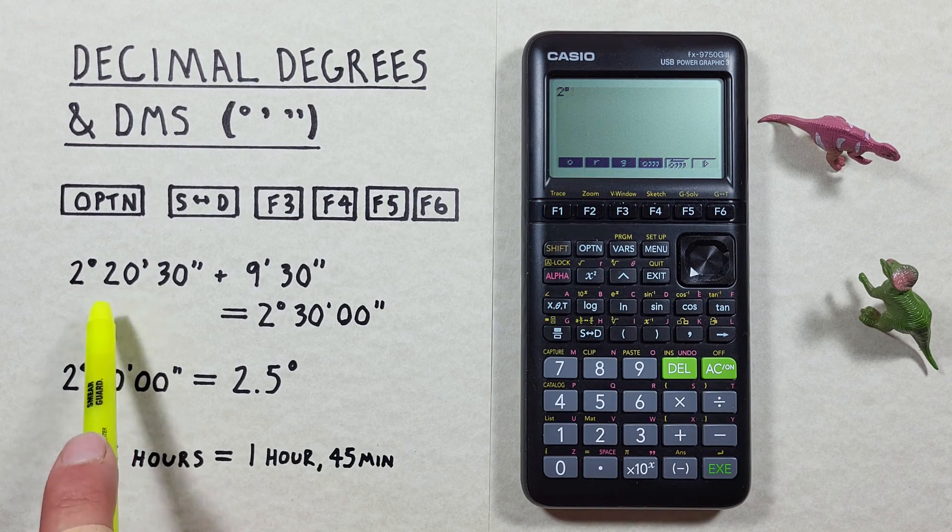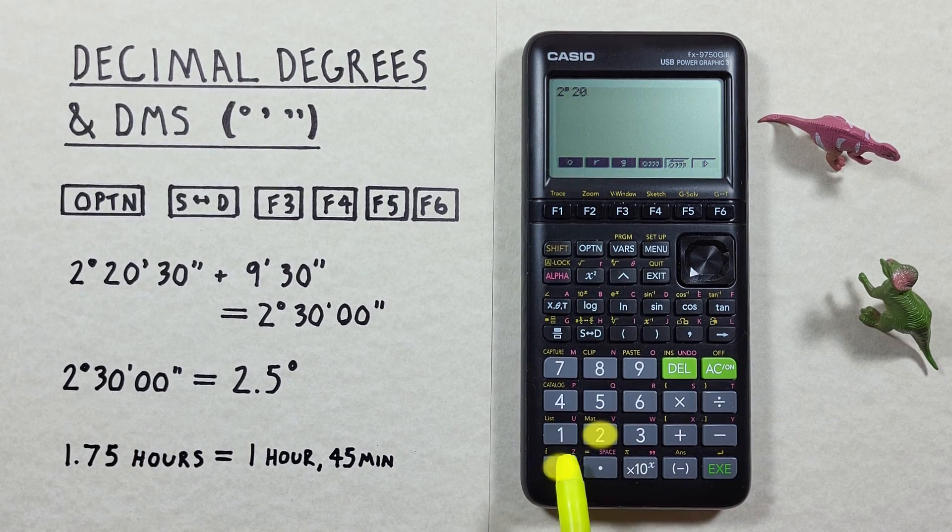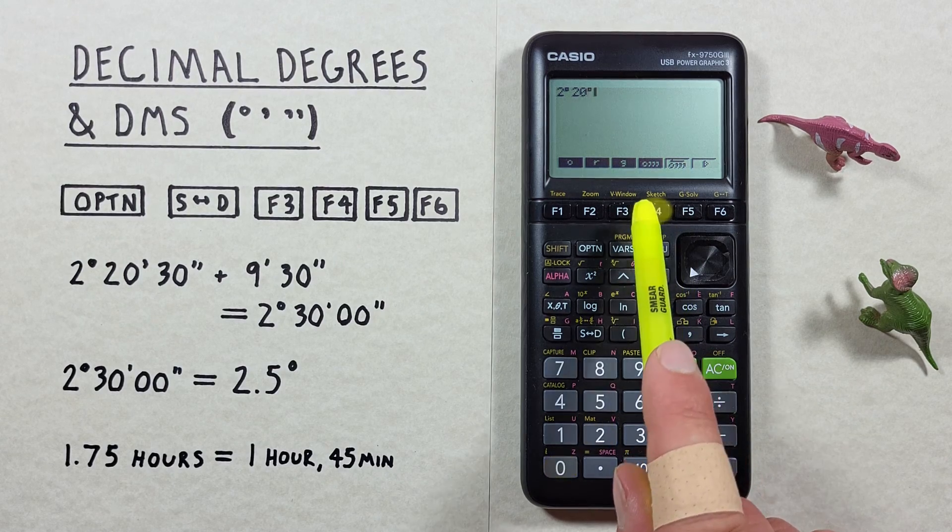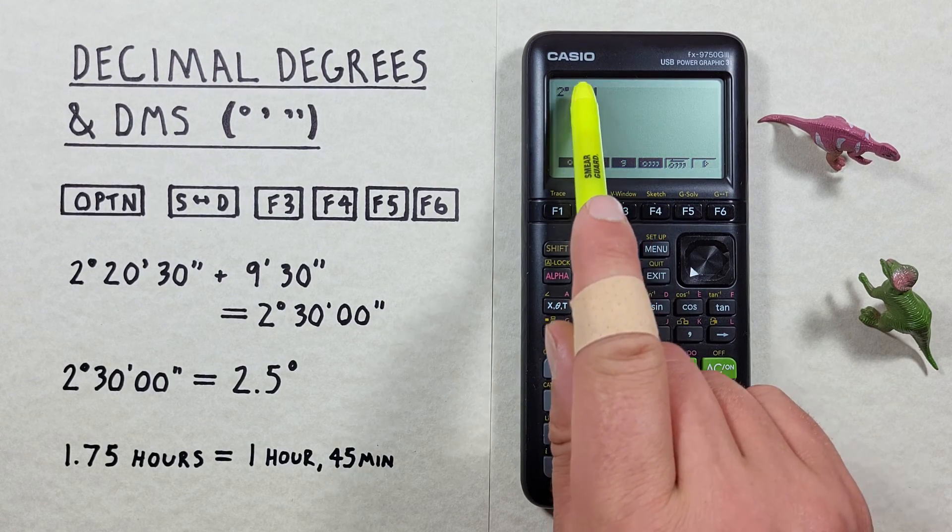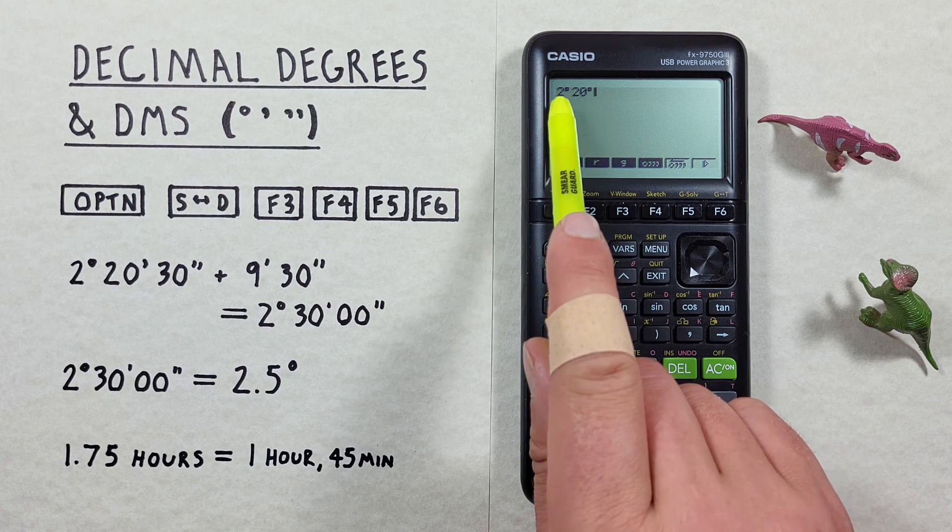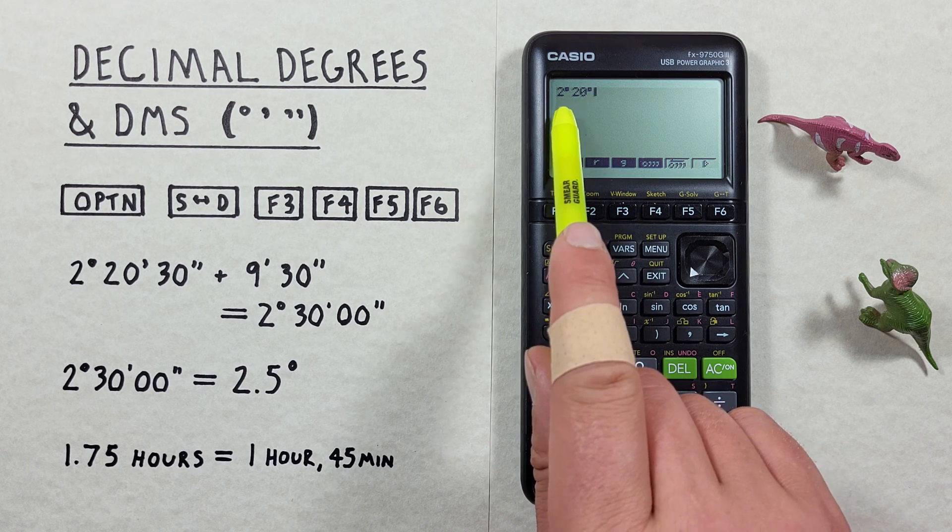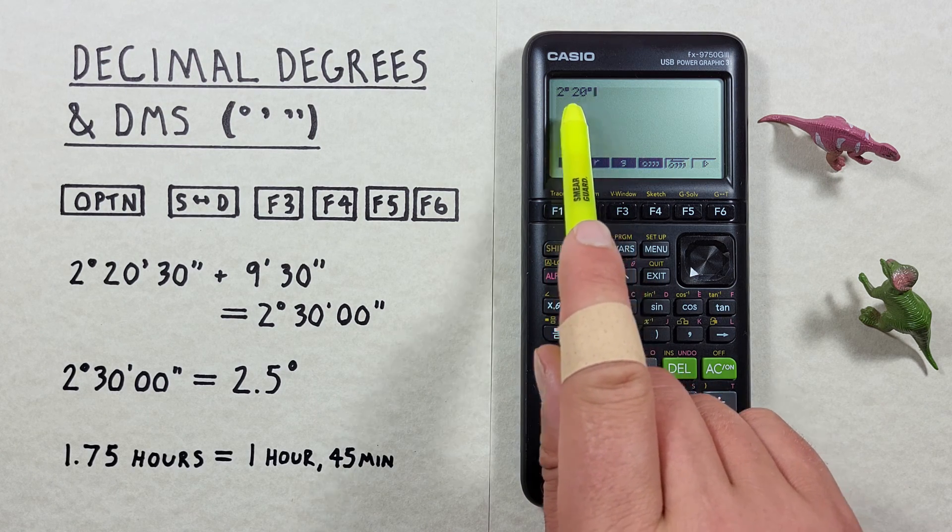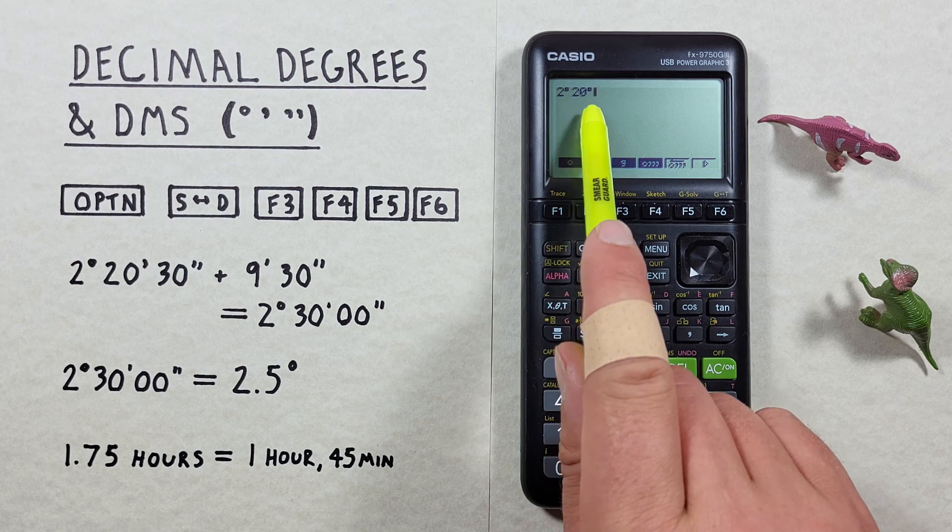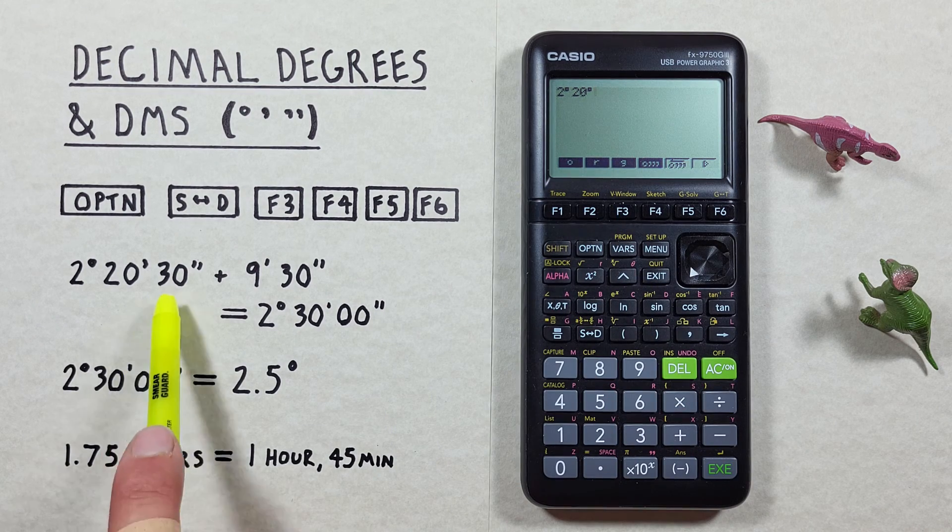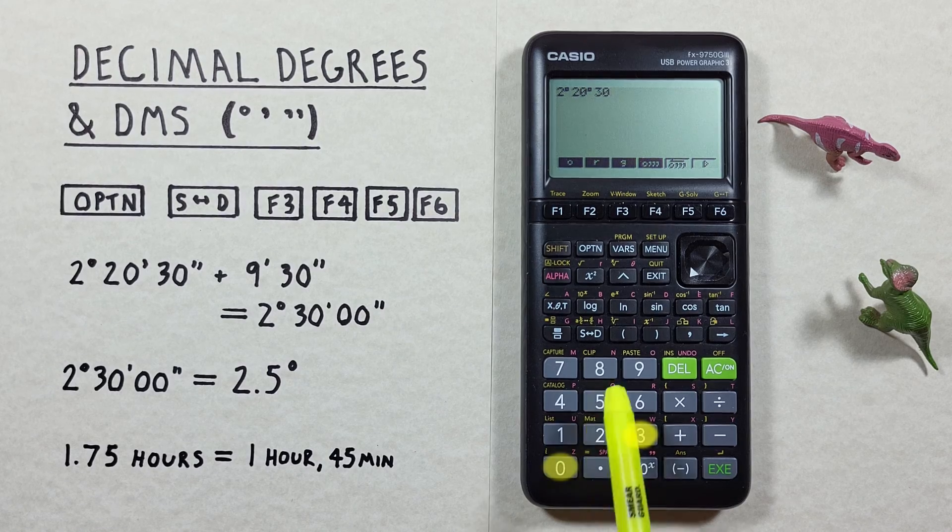Next we enter the 20 minutes and then we hit F4 again and we see the symbol appear again. It appears like the degree symbol but since it's coming after the two degrees, because of the context our calculator knows that represents minutes.